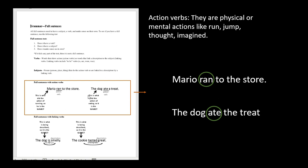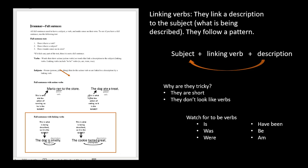In the example 'Mario ran to the store,' you can see that 'ran' is a physical action. And in 'the dog ate the treat,' 'ate' or 'eating' is also a physical action. Those are action verbs, and those are the ones we tend to pick out fairly easily. It's the linking verbs that are tricky and hard to find.